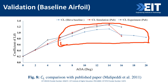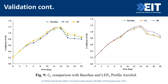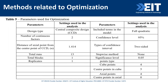Once validation was complete, we ran simulations for the four cases that Malipedi produced. We ran the same simulation and got a similar trend. Compared to the baseline aerofoil (no modification, shown in green), the 4B configuration produced the best result — the highest coefficient of lift.